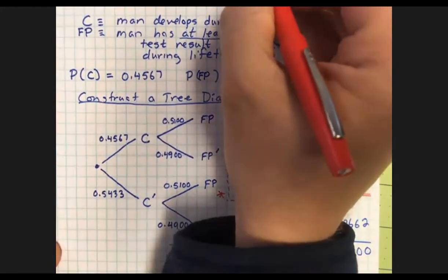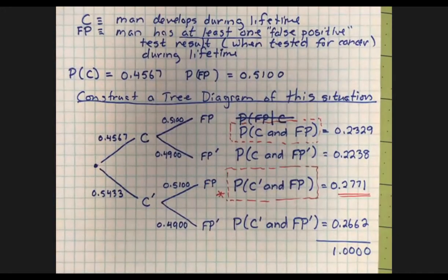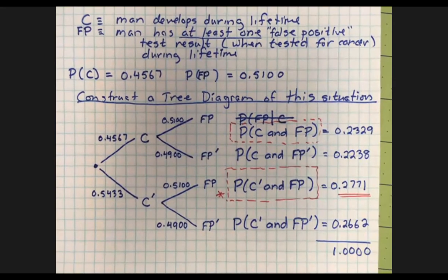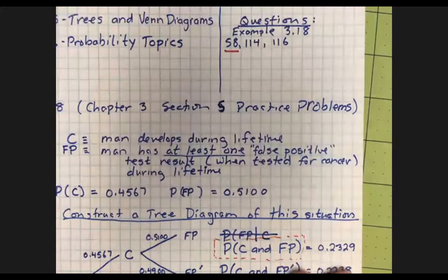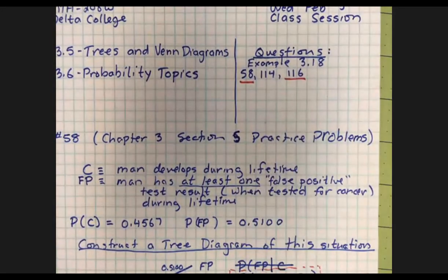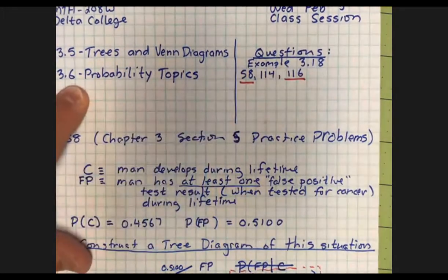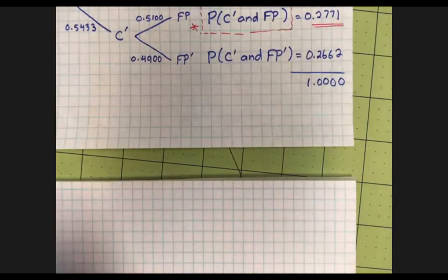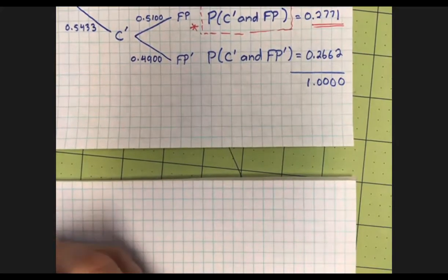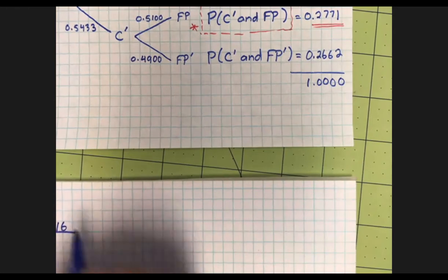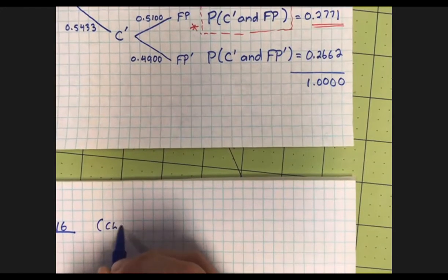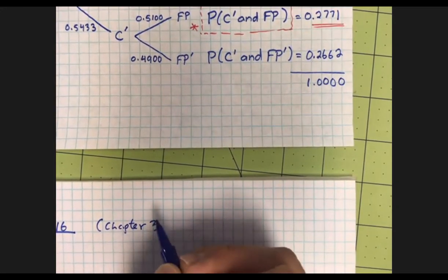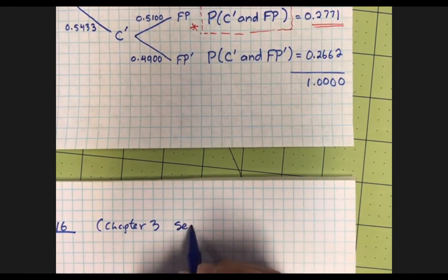So that's problem 58 — the tree diagram helps you decide between cases when you have multiple things to consider. Let me look at example 3.18 or 114. Let's do 116 first, then you can check 114 yourself, then we'll do 3.18, and then we'll get to the M&Ms.